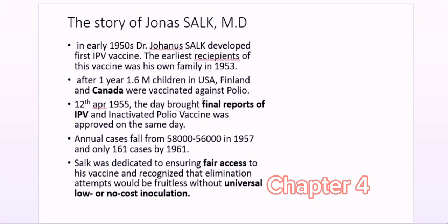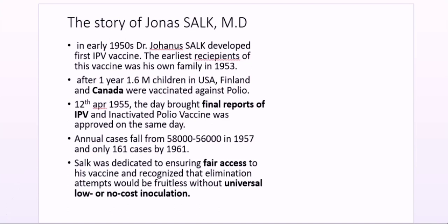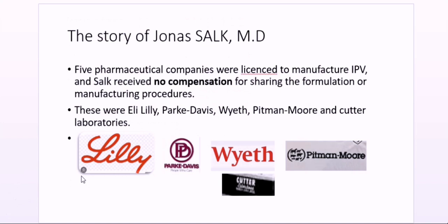Looking at the case numbers: in 1957, cases stood at around 58,000, but by 1961 — just four years later — cases had fallen to only 161. Salk was dedicated to ensuring fair access to his vaccine, recognizing that elimination would be impossible without universal low-cost or no-cost distribution.